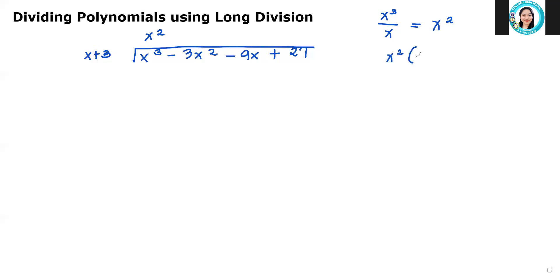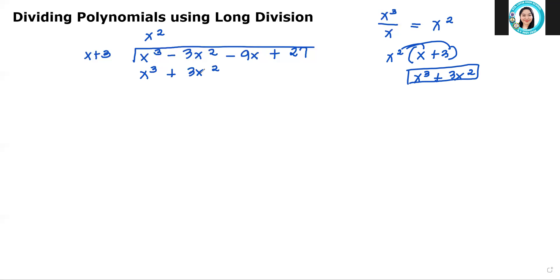So that's x squared times x plus 3. We have x plus 3 times x squared giving us x cubed plus 3x squared. This answer should be placed here. So we write x cubed plus 3x squared. Then you will now subtract — remember that you have to change the sign of the subtrahend, that is the 3x squared from positive to negative. If it's negative, make it positive, and then proceed to addition. Since this is positive, it will become negative, and this positive will also become negative.